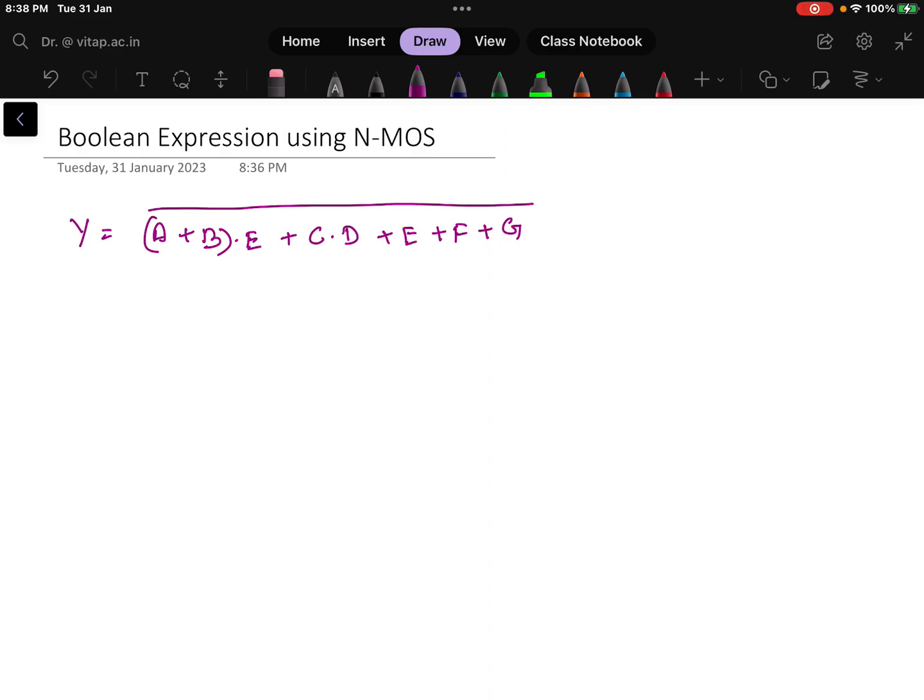In this video, I will be discussing how to implement Boolean expressions using NMOS. In subsequent videos, I will discuss how to use PMOS and CMOS as well. The expression given is: (A + B)·E + C·D + E + F + G.